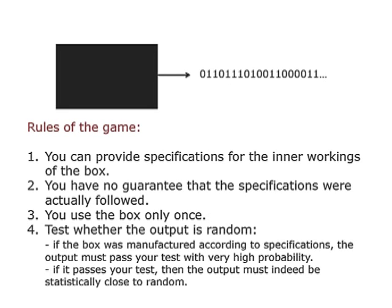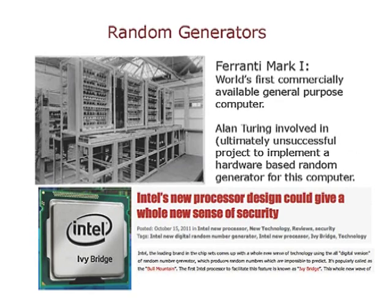This is sort of a philosophical question, but if you want to look at random generators, they go back a long way. In the very first commercially available general-purpose computer — I think this was back in 1951 — Alan Turing was involved in trying to build a physical random number generator for it, and ultimately gave up. So this first computer did not have a random number generator, and I don't know if any of them since then have had one.